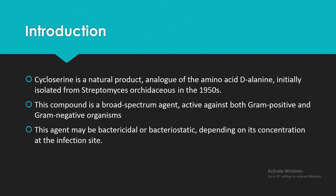Cycloserine is a natural product and it is an analog of the amino acid D-alanine. It was initially isolated from Streptomyces orchidaceus in the 1950s. This agent is a very broad-spectrum agent, so it can be used against gram-positive organisms as well as gram-negative organisms. It can have bactericidal or bacteriostatic effects depending upon its concentration at the infection site.